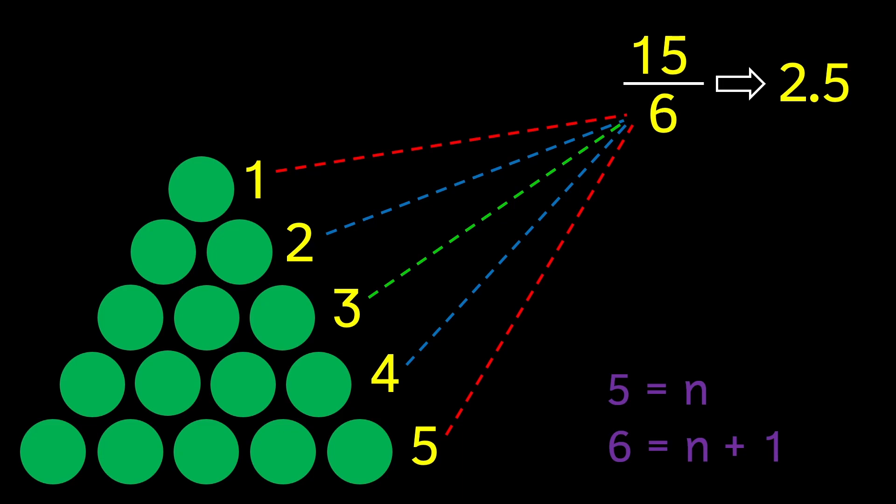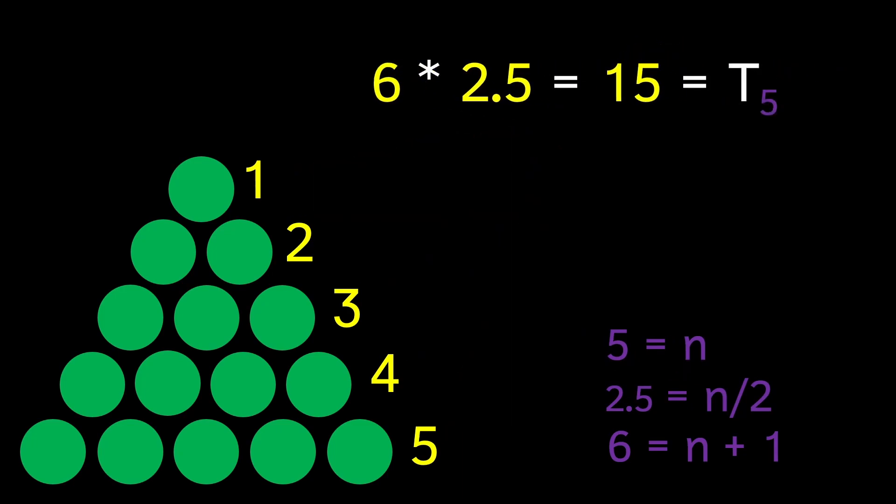Next, by dividing this number by six, we get 2.5, which tells us how many times we can fit six dots into our triangle. It's also exactly half of the number of rows in our triangle, so we can call it n over two. If we multiply six and 2.5 together, it gives us the total number of dots in our triangle.